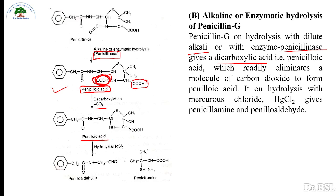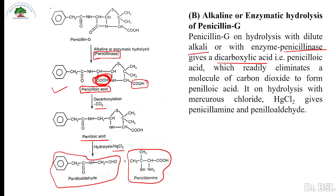Peniloic acid on hydrolysis with mercury chloride (HgCl2) gives penicillamine and peniloaldehyde. These two compounds are obtained after the alkaline or enzymatic hydrolysis of penicillin G.